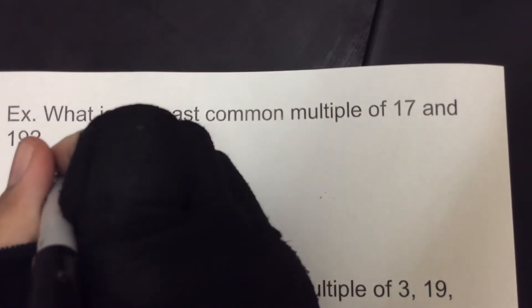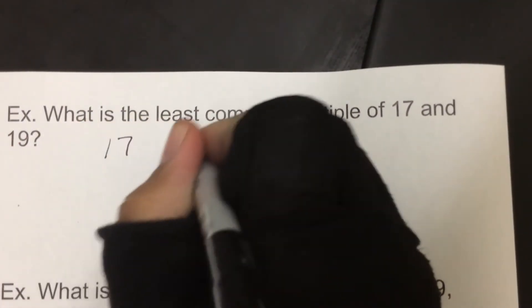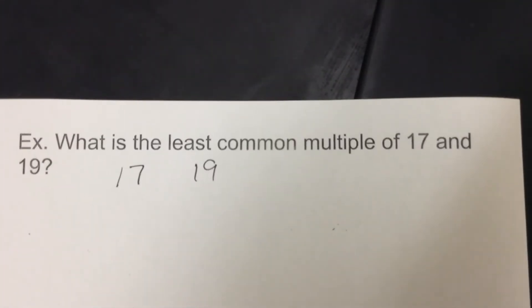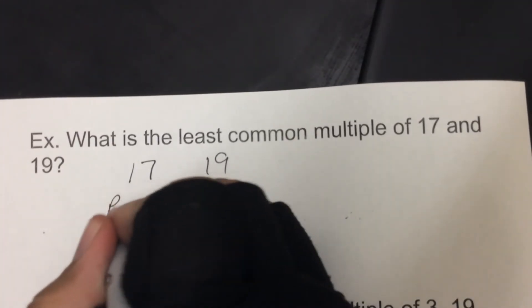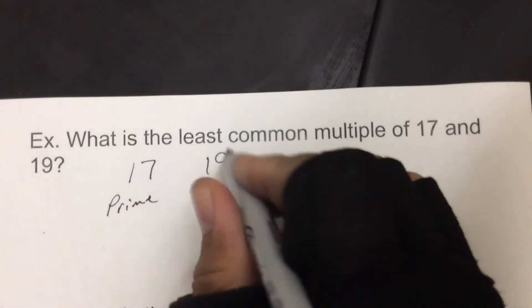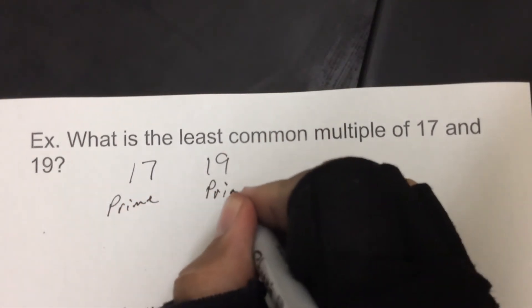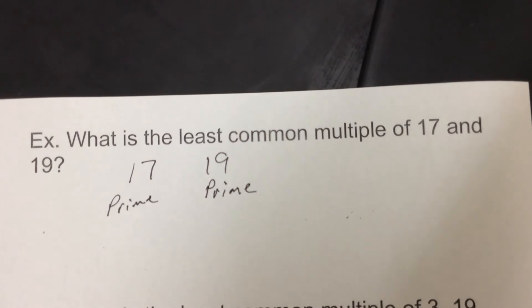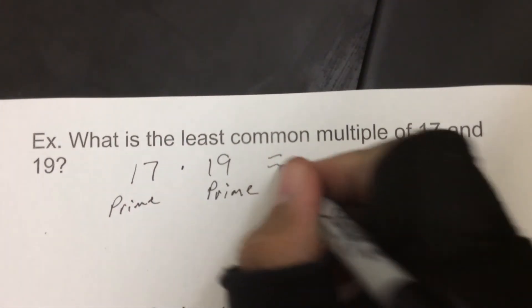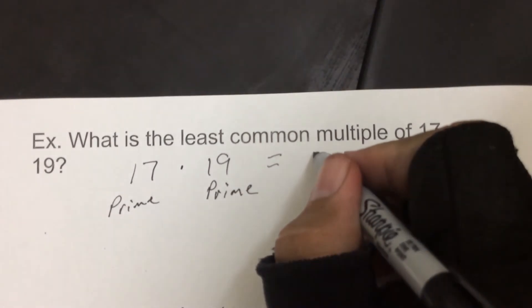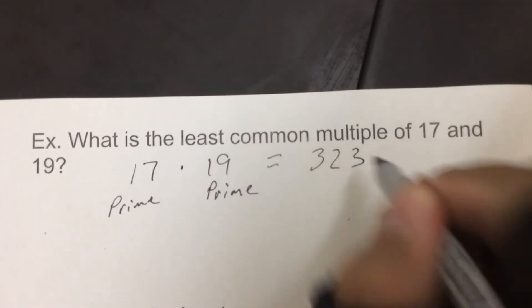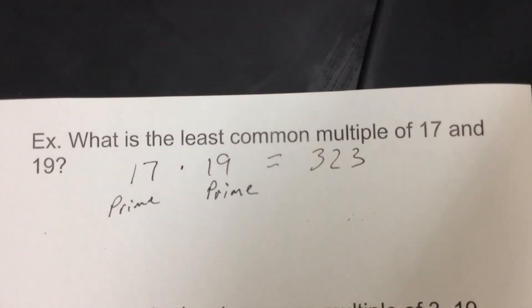So 17 and 19. Well, 17 doesn't break down anything. It's prime. 19 is also prime. So when you're dealing with two numbers that have absolutely nothing in common, all you have to do is multiply them and you're going to get the solution. So if we took 17 times our 19, we're going to get 323 and that would be its least common multiple.